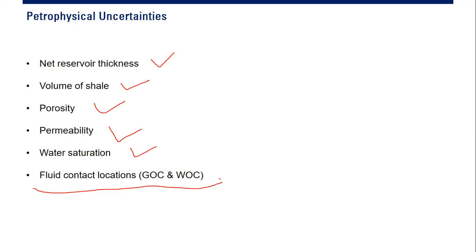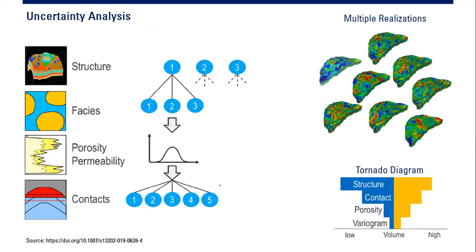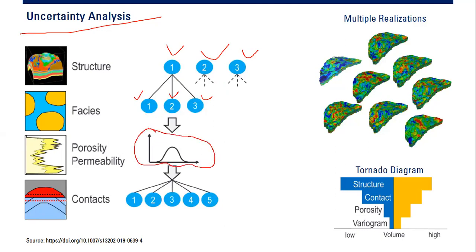To accommodate uncertainty, we perform uncertainty analysis. For example, for structure we have three possible scenarios: scenario one, two, and three. For each scenario we have three possible facies: facies one, two, and three. For each facies we have a porosity and permeability distribution, and for each of those we have several possible contacts: contact one through five.